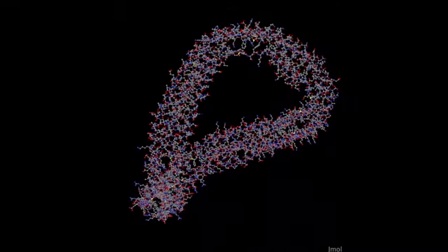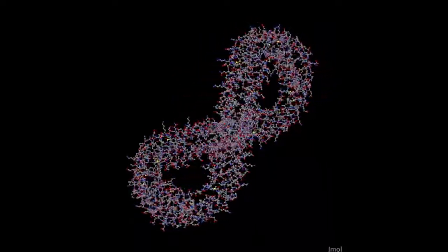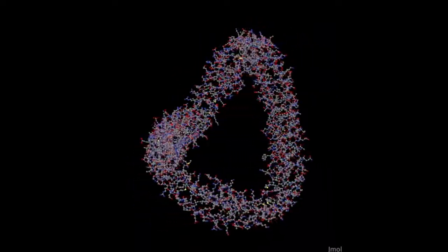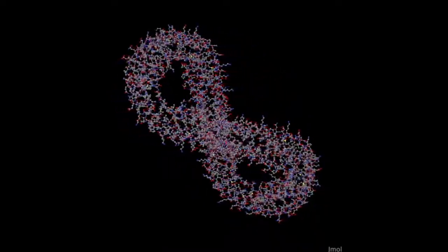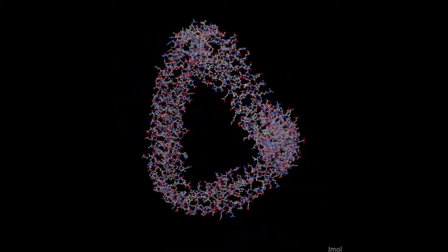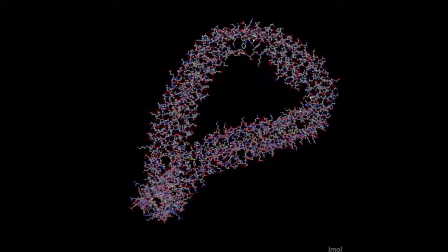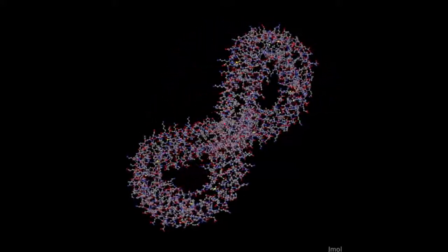This is ApoA1 in its unbound state. The molecule consists almost entirely of pseudo-continuous amphipathic alpha helix with a shape similar to a horseshoe of dimensions 12.5 by 8 by 4 nanometers.